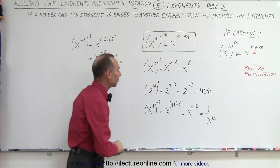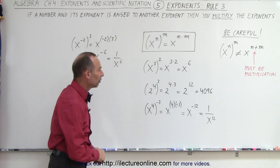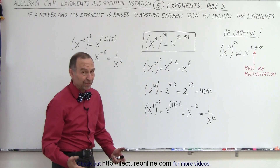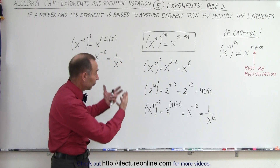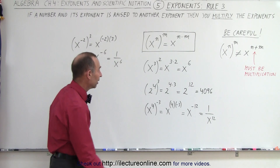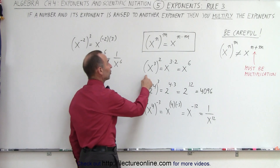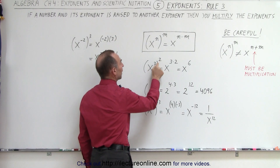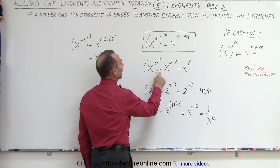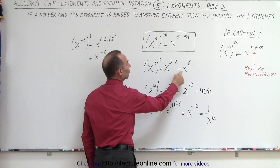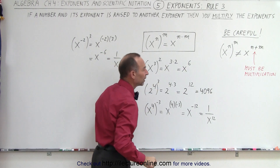So be very careful not to make that mistake. Some examples — once you realize what the rule is, they're very simplistic. Here we have x to the third power, the whole thing raised to the second power. That's x to the 3 times 2, or x to the 6th power.